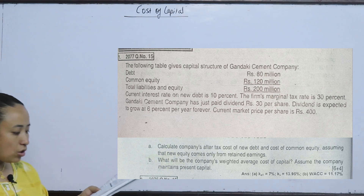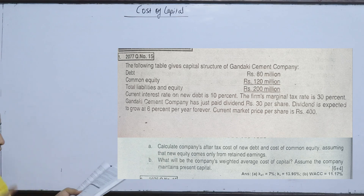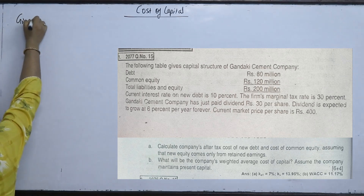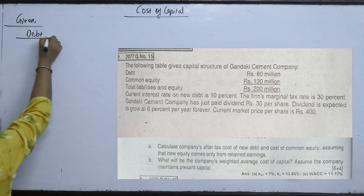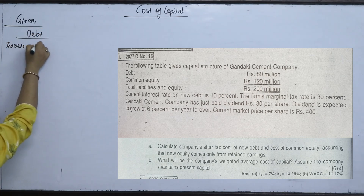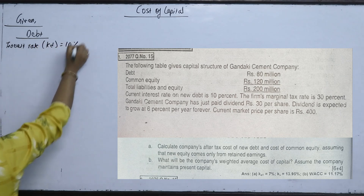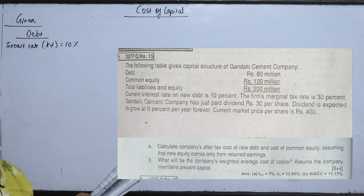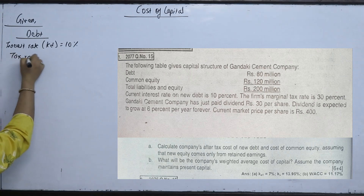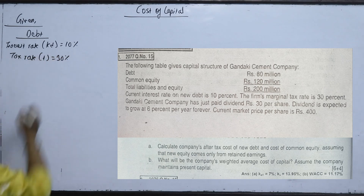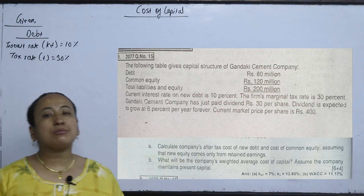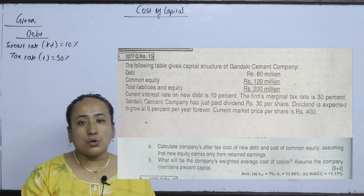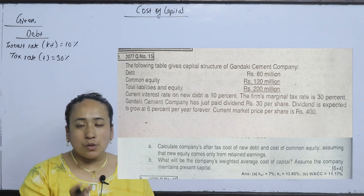The current interest rate on debt: what is the interest rate? It is 10%. The interest rate of KD is 10% and the firm's marginal tax rate is 30%.